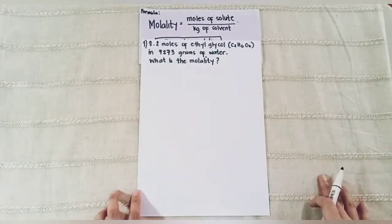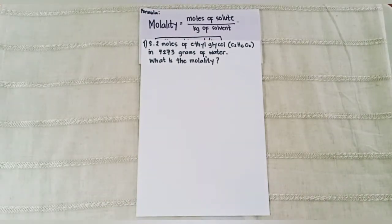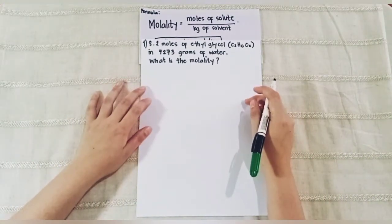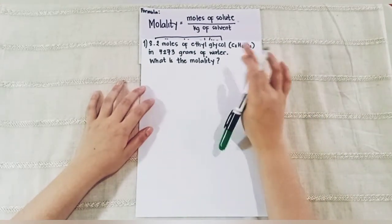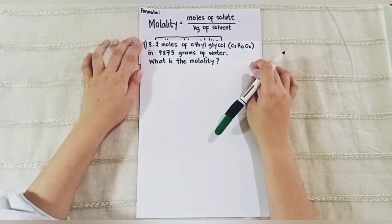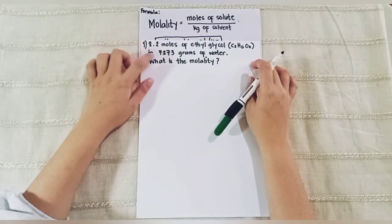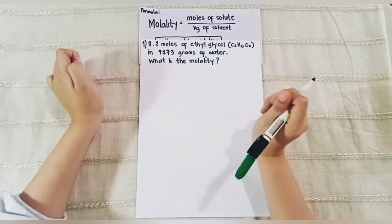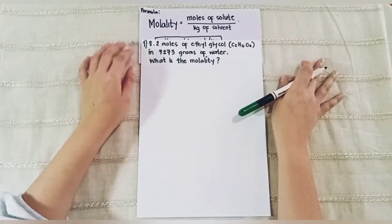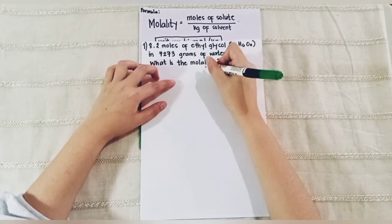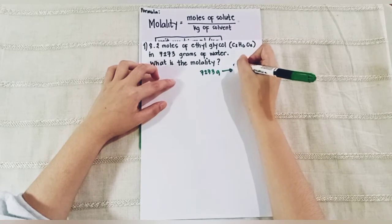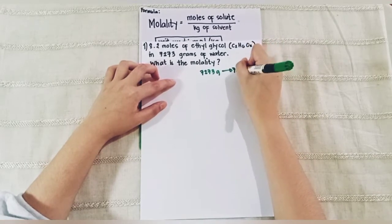Let's try to solve this given example. It says 8.2 moles of ethylene glycol (C2H6O2) and 7,273 grams of water — what is the molality? First, let's determine our solute and solvent. The 8.2 moles is our solute, and 7,273 grams of water is our solvent. Since the solvent is in grams, we have to convert it to kilograms: 7,273 grams becomes 7.273 kilograms.